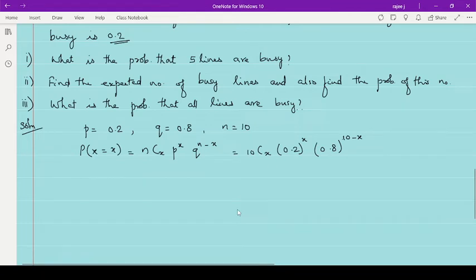Then here firstly we need to find probability that 5 lines are always busy means X equal to 5. So here it is, what to do is 10C5. X is 5, 0.2 raised to 5 into 0.8 raised to 10 minus 5.